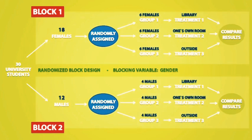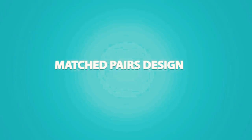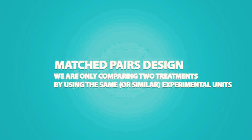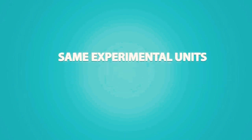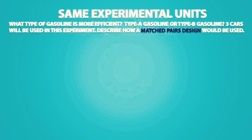The last type of experiment is the matched pairs design. In a matched pairs design, we are only comparing two treatments by using the same or similar experimental units. If we are using the same experimental units, consider this example: what type of gasoline is more efficient, type A or type B? Three cars will be used in this experiment. If we are using the same experimental units, then each experimental unit will receive both treatments.